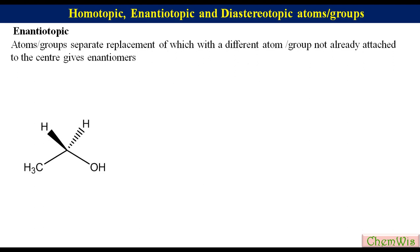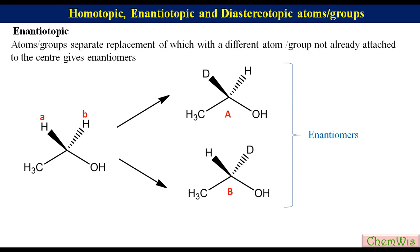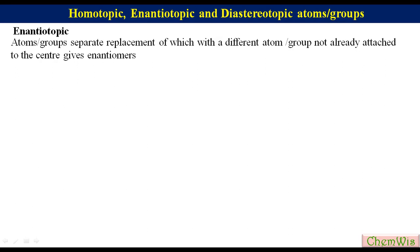Let's take the example of ethanol. We have to find the relation between two hydrogens A and B. You just replace A and B one by one with a different atom, say deuterium. Replacement of HA with deuterium gives structure A, while that of HB gives structure B. We can see that structures A and B are enantiomers. So HA and HB are enantiotopic atoms.